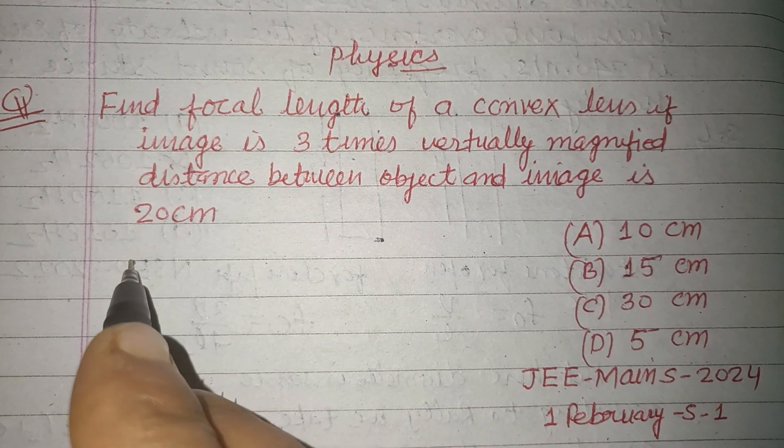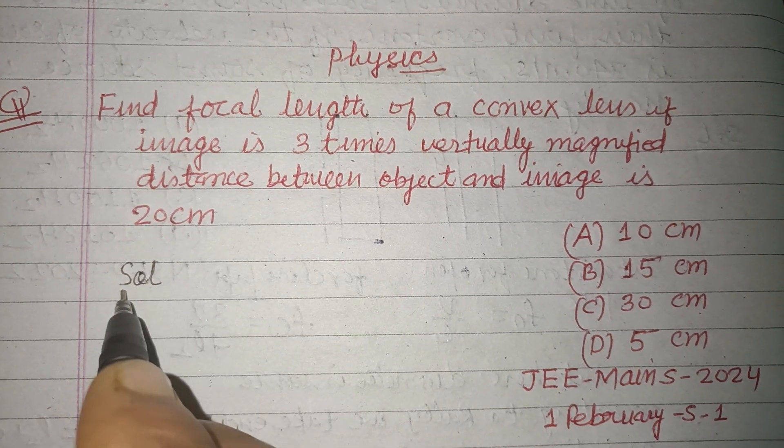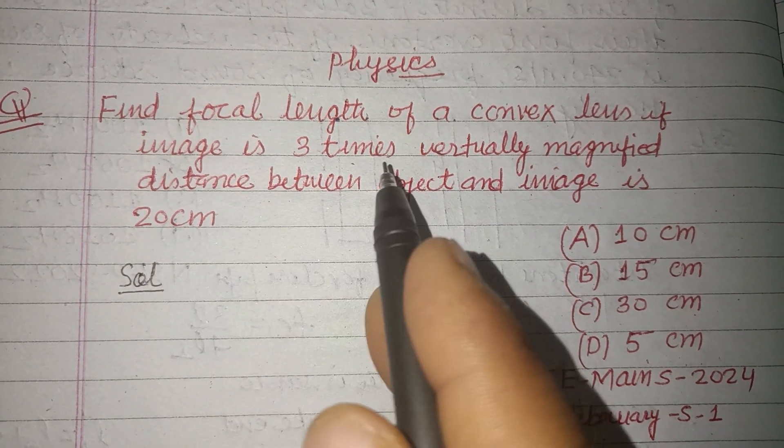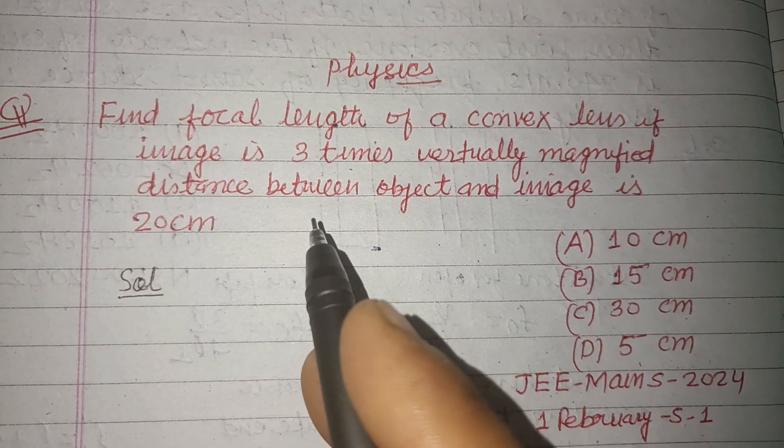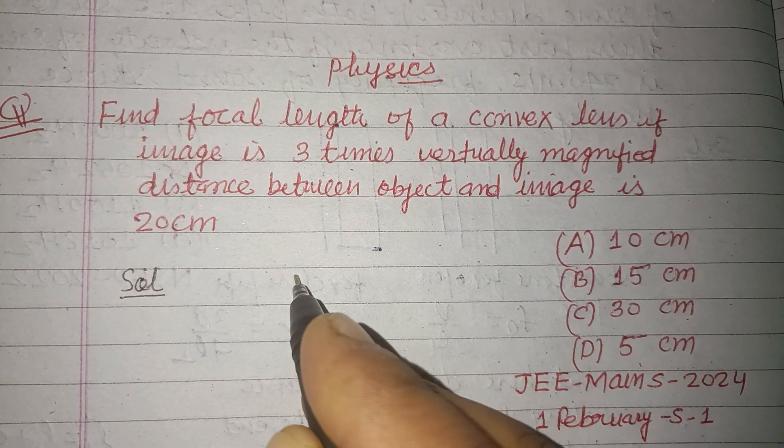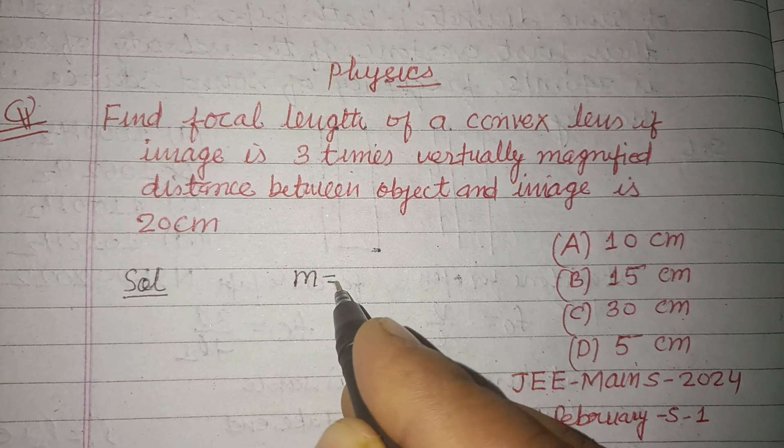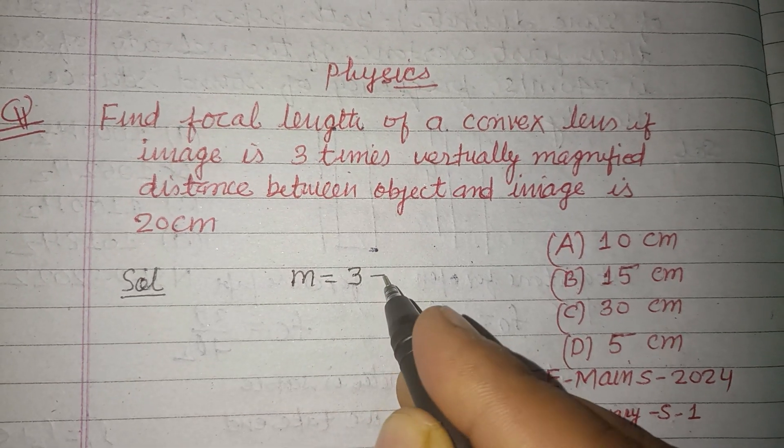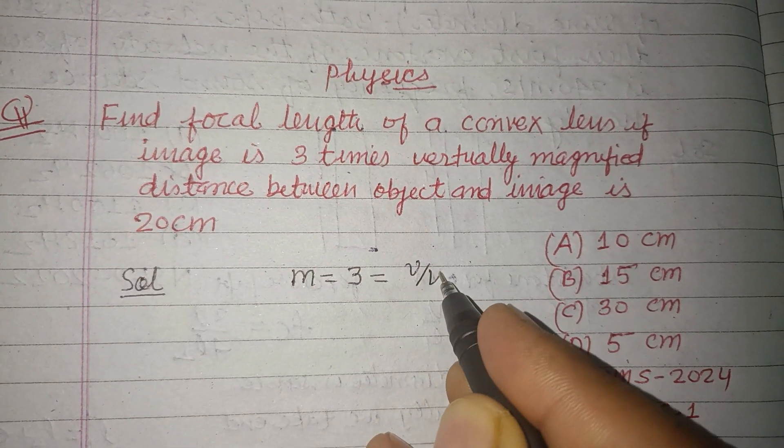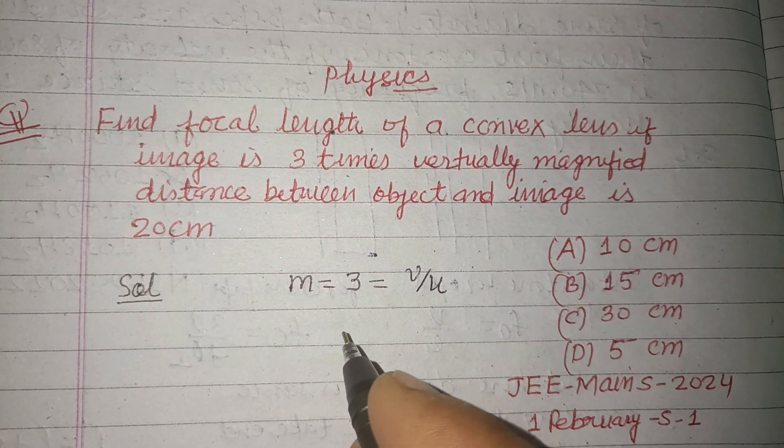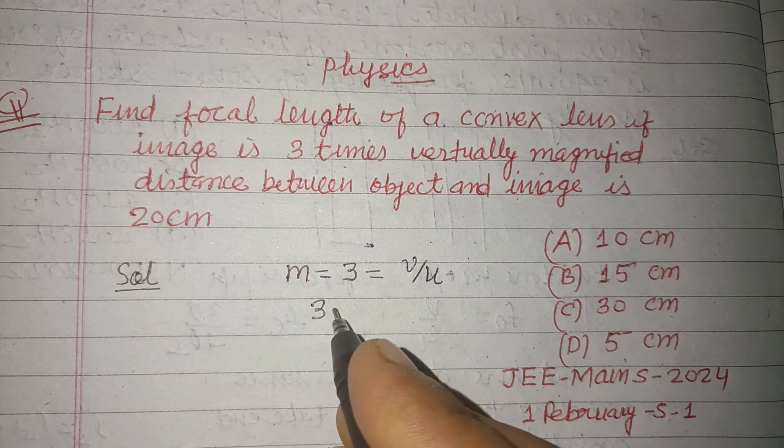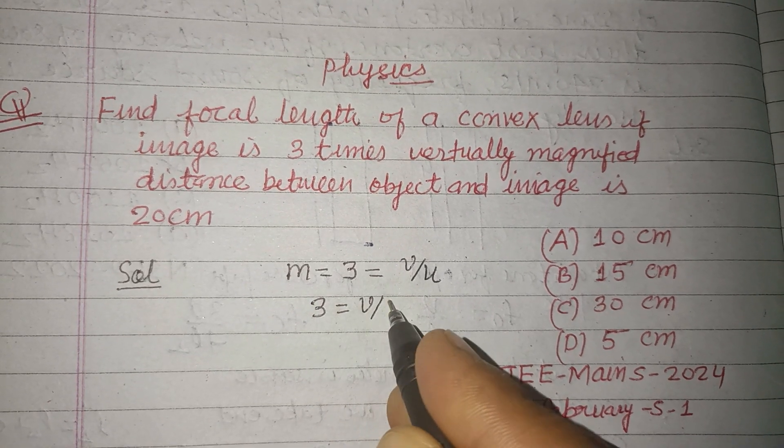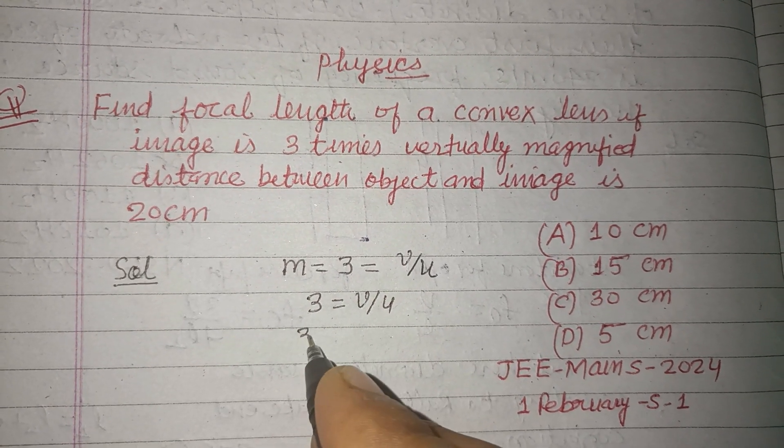So here it is given that magnification is 3, so m equals 3. And you know that m equals v upon u, so here 3 equals v upon u, or we can write 3 upon 1.